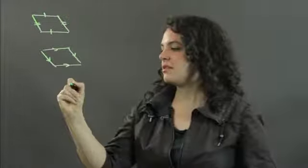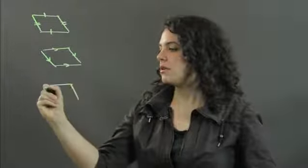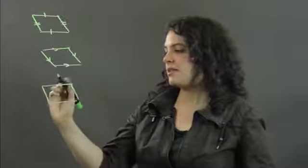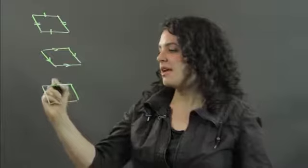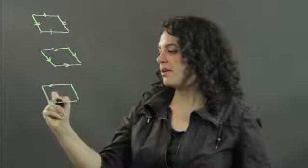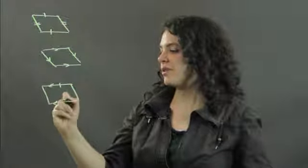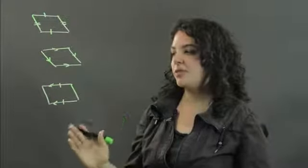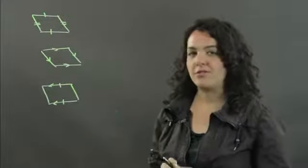The third test: you only need to look at one pair of opposite sides, take the top and the bottom for example. If they are both parallel and congruent, then your quadrilateral is a parallelogram.